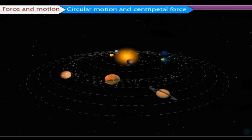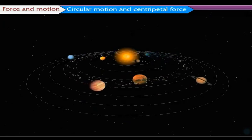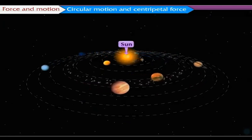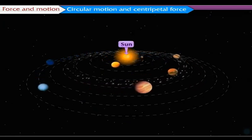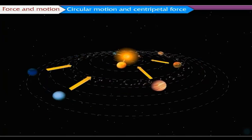Like the moon, other planets in the solar system too revolve around the sun in specific orbits. There exists such a force on these revolving planets as well. That is, the sun must be attracting the planets, including the earth, towards itself.